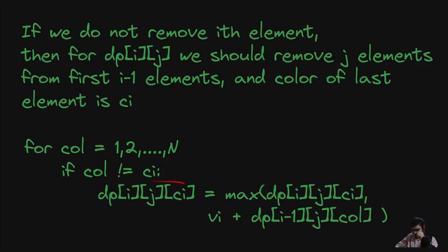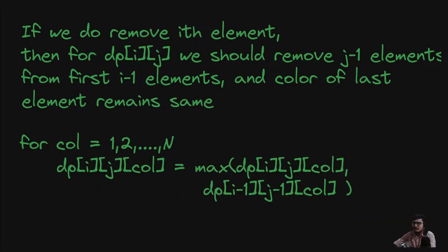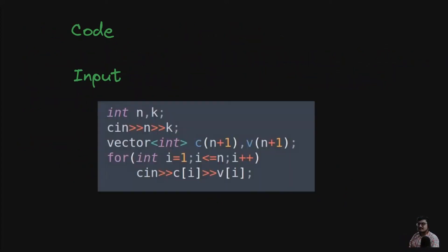Specifically, if current color does not equal c_a, then dp[i][j][c] = max(dp[i][j][c], v_i + dp[i-1][j][prev_color]). If we do remove the i-th element, the color of the last picked element remains the same: for all colors, dp[i][j][col] = max(dp[i][j][col], dp[i-1][j-1][col]).